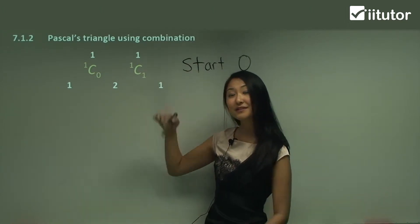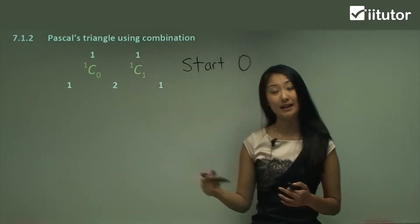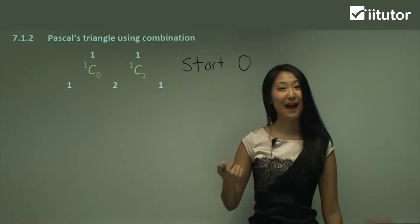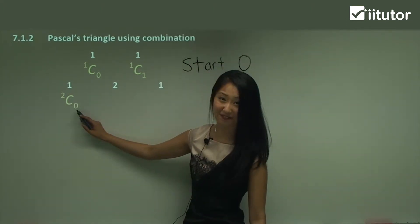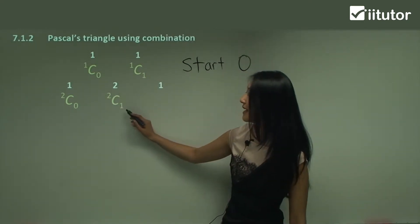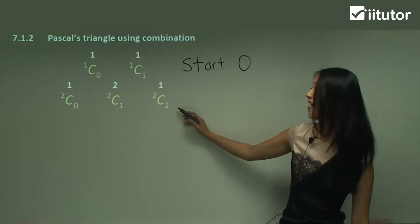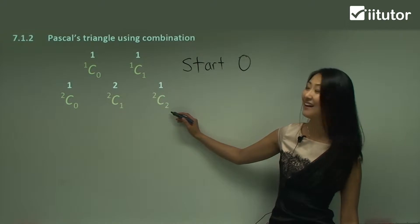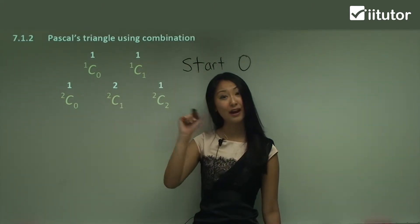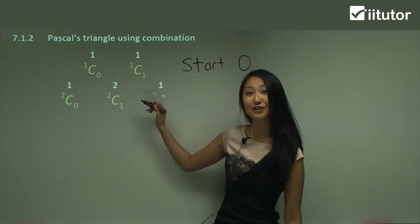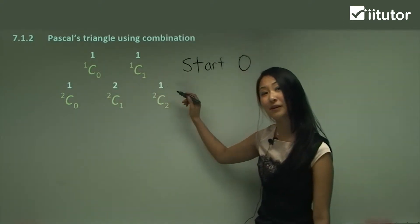For the next line — one, two, one — we use combinations again. Since these are the coefficients for index two, we start with 2C0. The next is 2C1, and finally 2C2. Those last two numbers should always be the same. Let's check: 2C0 gives one, and 2C1 gives two. You can see how combinations give us these numbers.